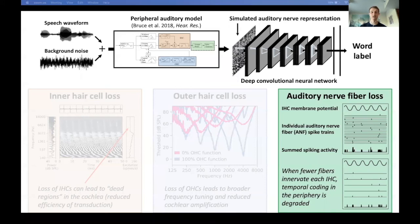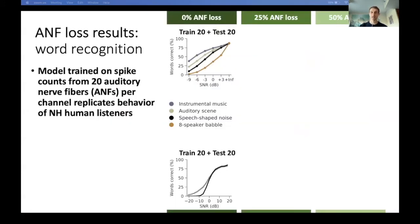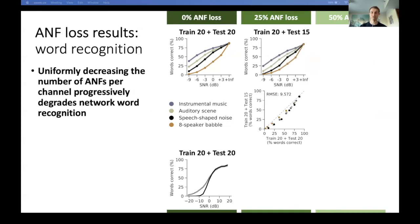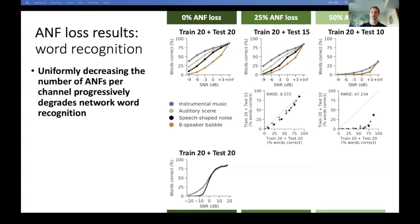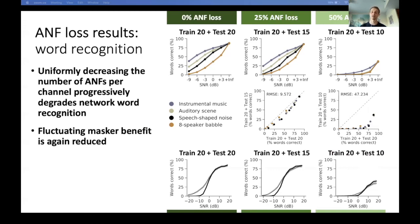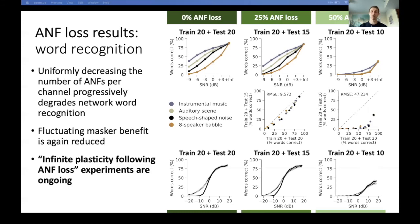Now I'll briefly show some preliminary results of similar experiments with simulated auditory nerve fiber loss. The network trained and tested with 20 nerve fibers per inner hair cell exhibits good speech recognition performance in noise, consistent with normal hearing humans. Losing 25% of auditory nerve fibers uniformly across the cochlea with no retraining produces only slight deficits. Losing 50% of auditory nerve fibers results in severely impaired speech recognition — networks are virtually unable to recognize any words when noise is present, and performance in quiet is also quite poor. This type of hearing loss also reduces the benefit networks receive from fluctuating maskers. We're still actively looking at the extent to which these deficits can be mitigated by a maximally plastic auditory system — that is, by training the network with fewer nerve fibers.